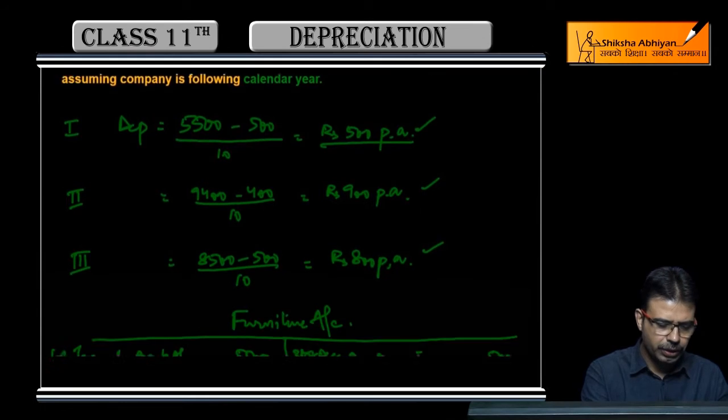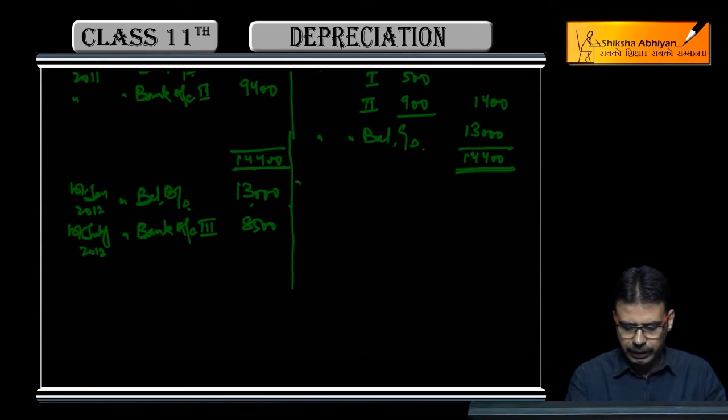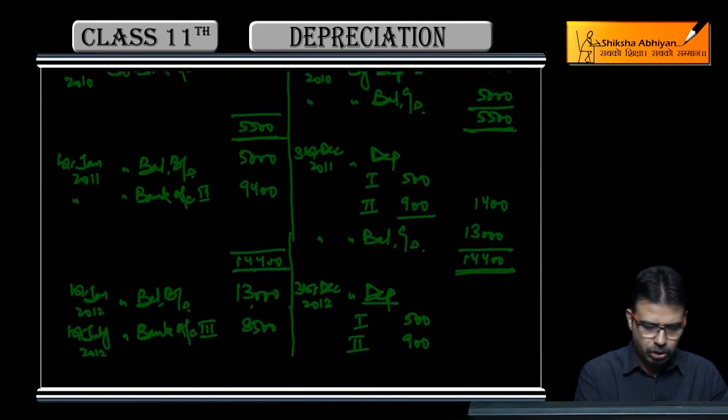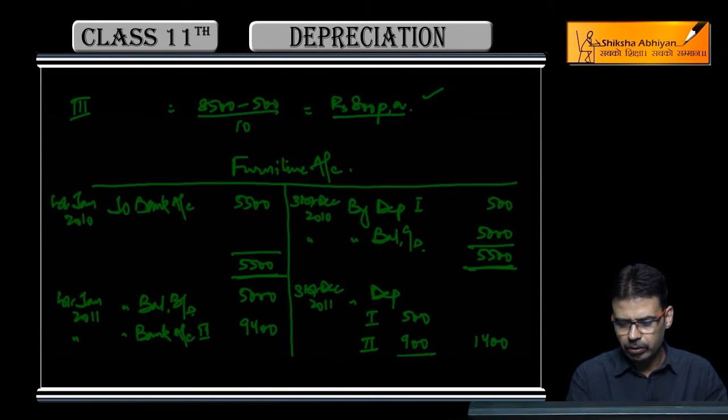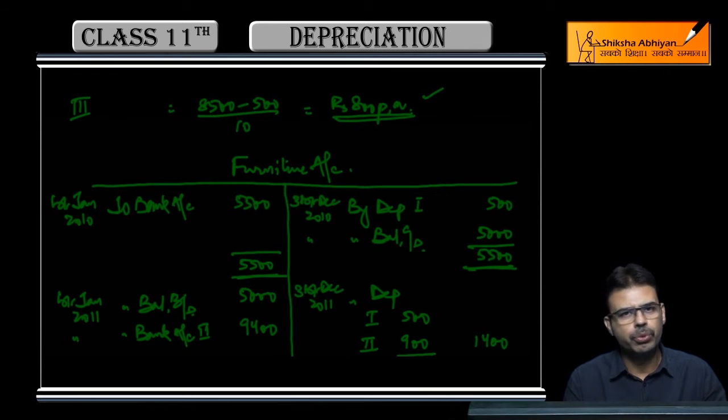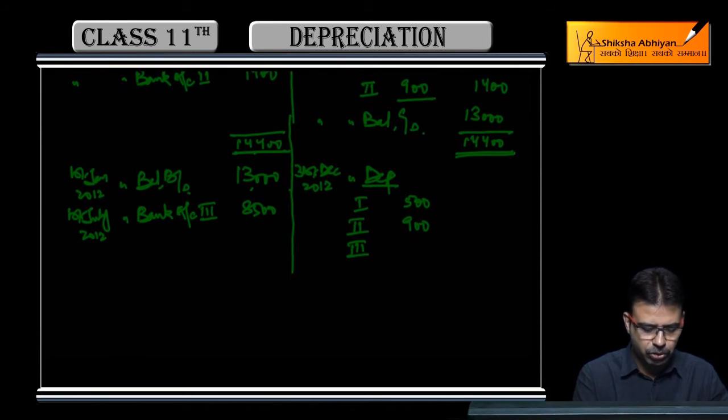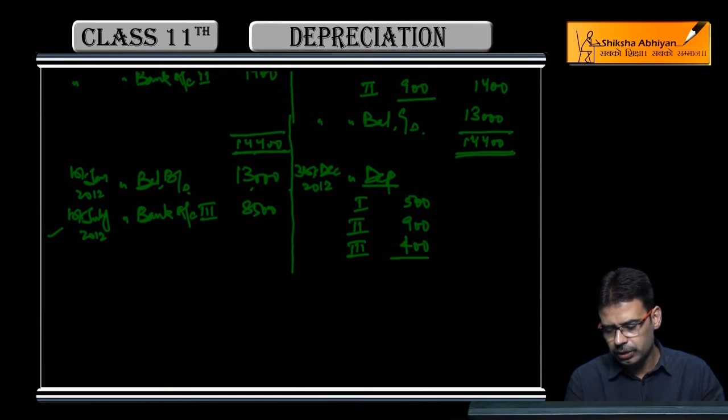At year end, when we apply depreciation, we have three furniture items. On the first, full year depreciation of Rs. 500 will apply. On the second, also full year Rs. 900. And on the third, Rs. 800 per annum—we calculated this—but I purchased this only on 1st July, so half-year depreciation will apply.